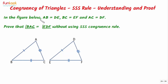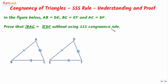Here is our problem. In the figure given below, AB is equal to DE, BC is equal to EF, and AC is equal to DF. We have to prove that angle BAC is equal to angle EDF without using the SSS congruence rule.